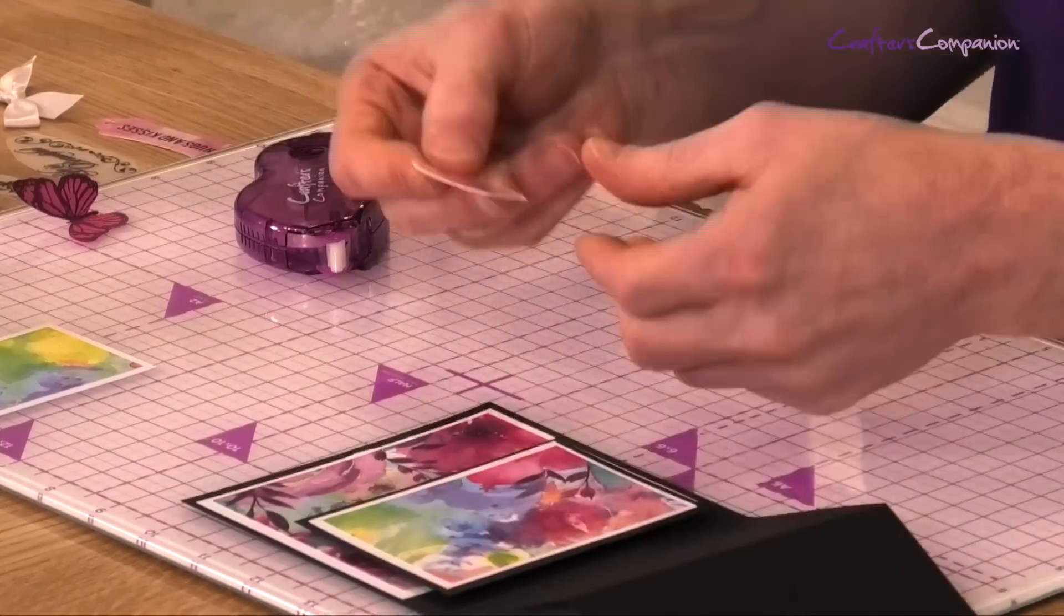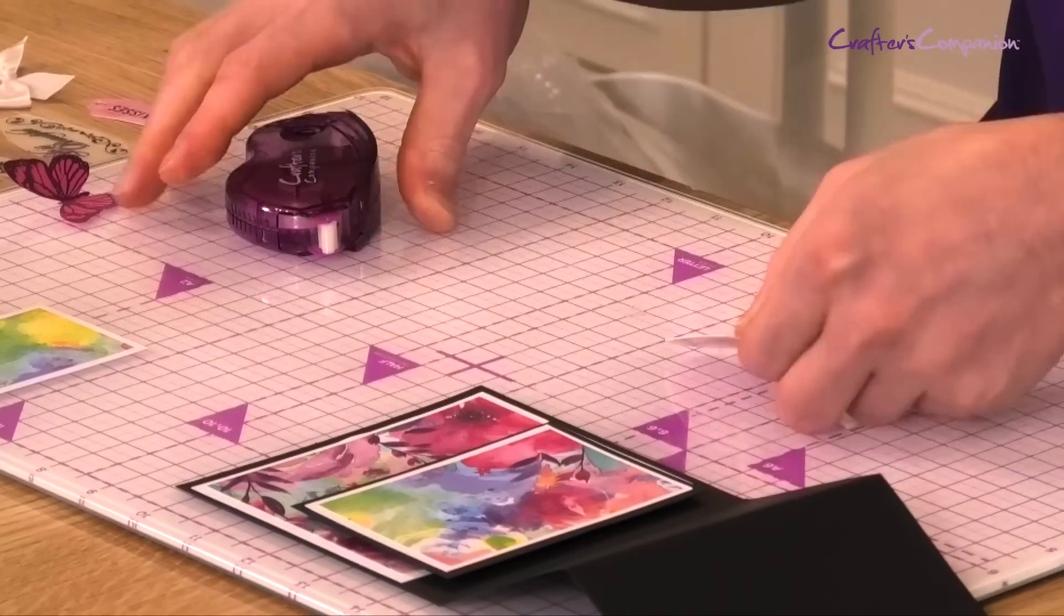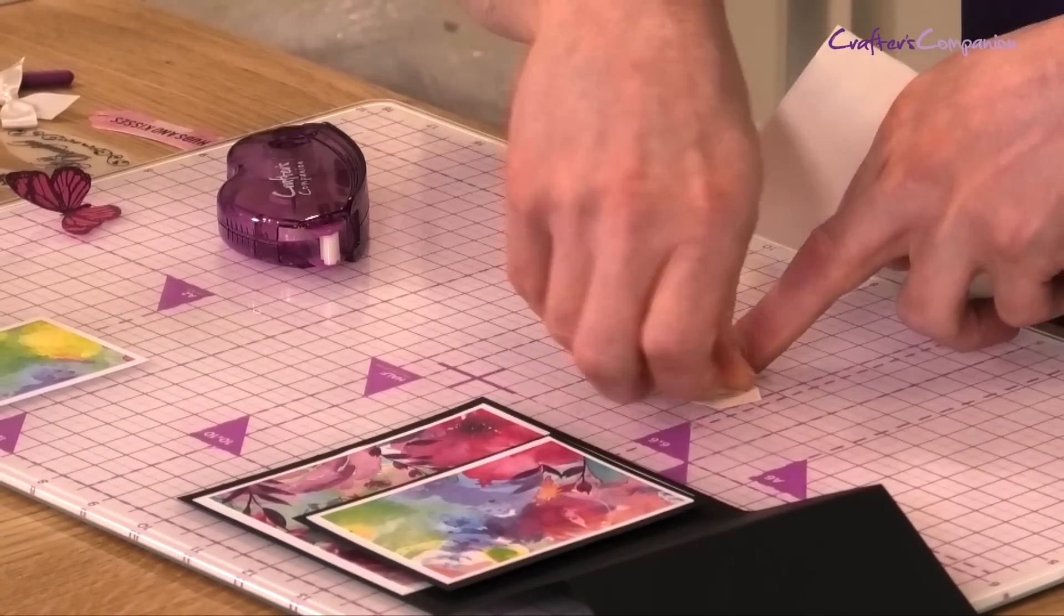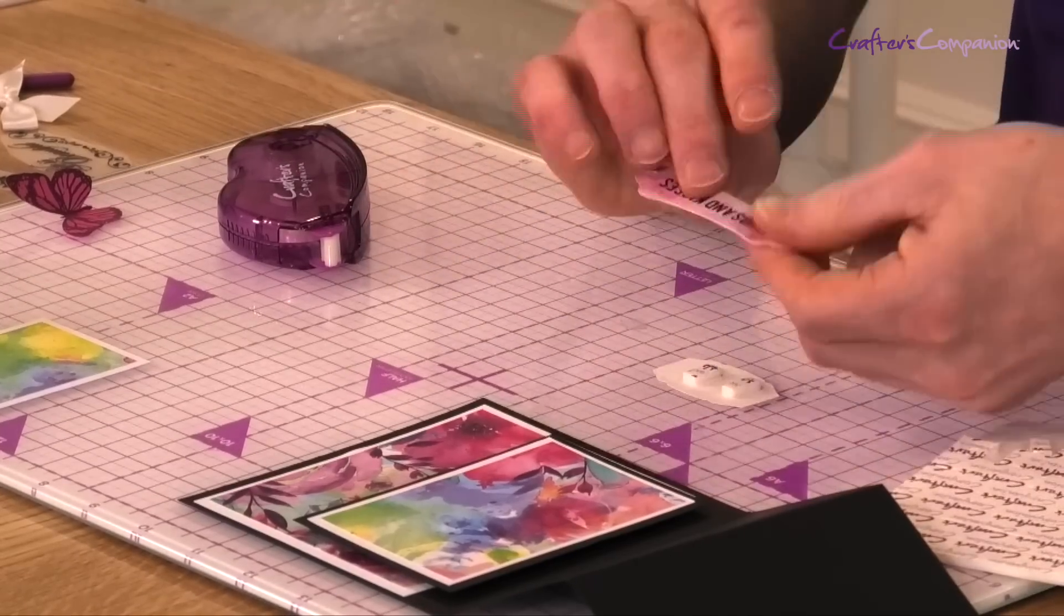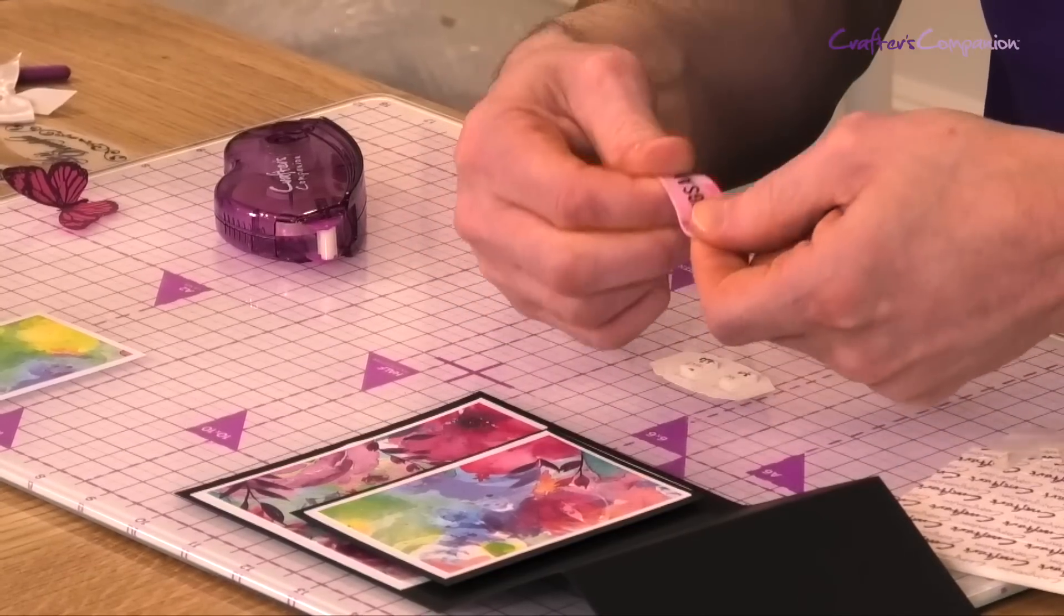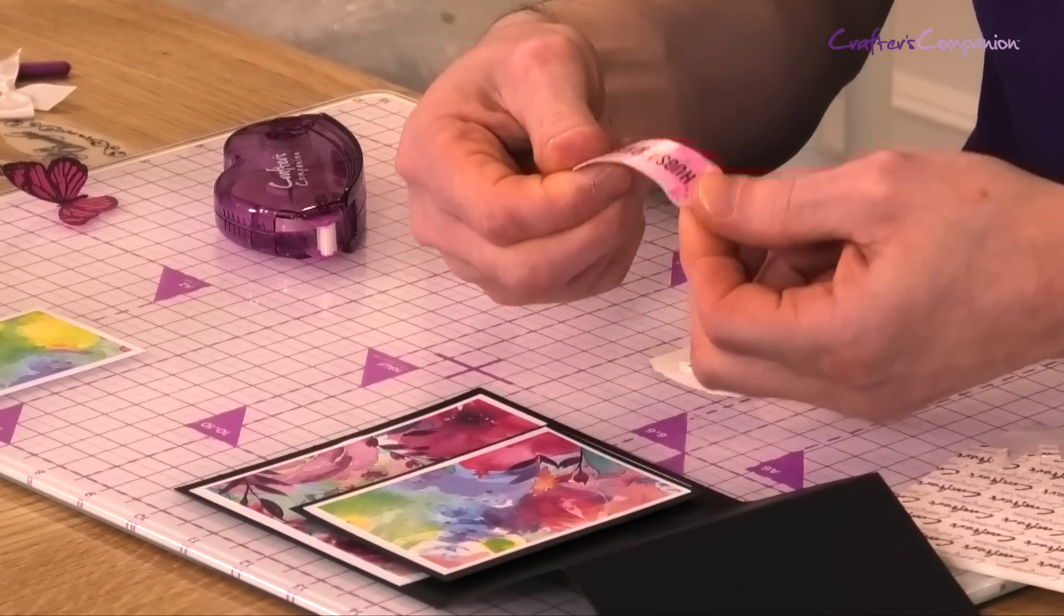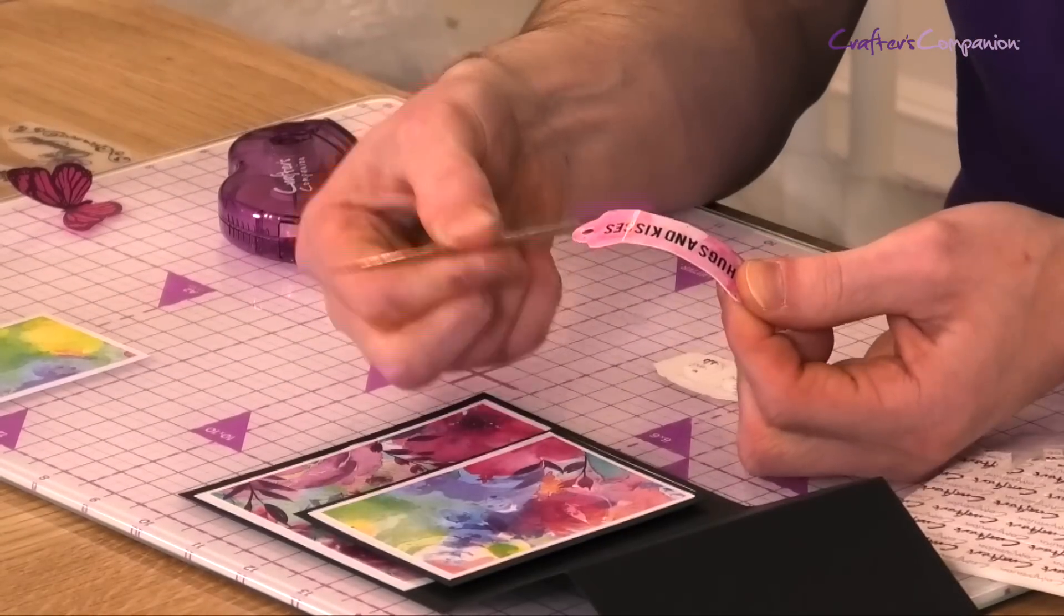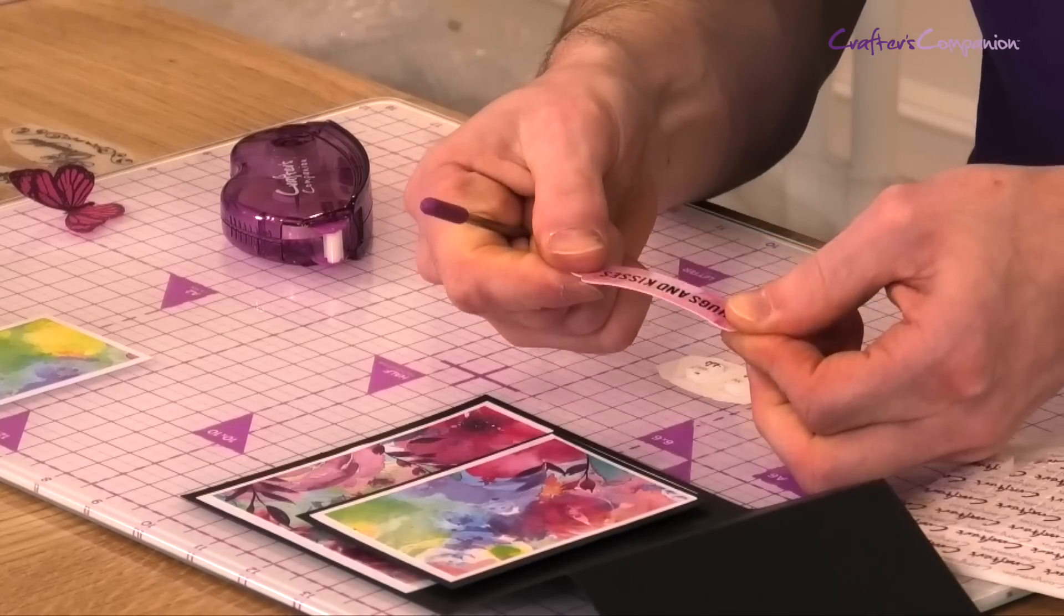We're just going to take a couple of the pre-die cut sentiments that we've got within the kit. And again, just add in some 3D foam pads just onto the back. And we've also got hugs and kisses as we can see here. So all that we just want to do is add a bit of shape to it. So if you ever have trouble with your fingers manipulating it, you can also take your pokey tool and then all you're just wanting to do is just add a wee bit of shape.